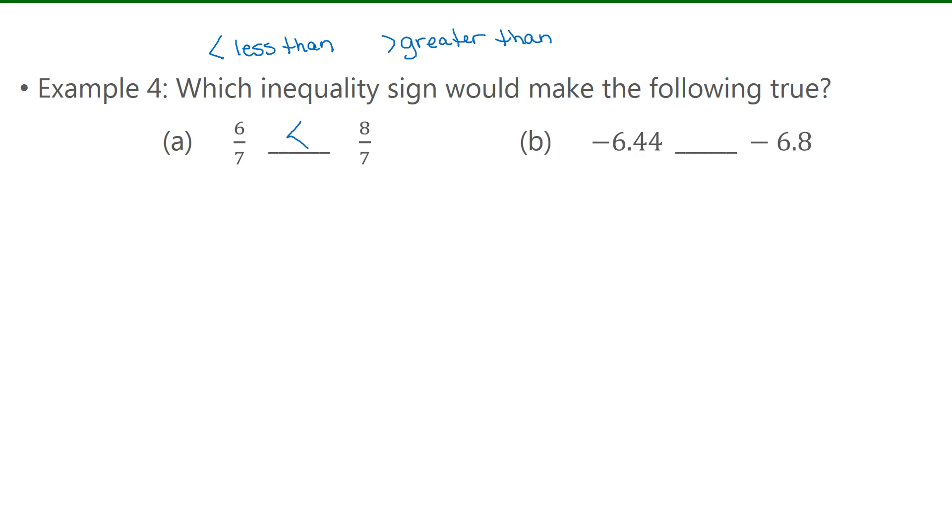Now for B, look at the ones place, they're the same. And you can move on to the tenths place. Again, I can put this on a number line, so we can compare them. I'm going to break my number line into tenths. Negative 6.0, negative 6.1, 6.2, and I'm going to go all the way up to 6.8.